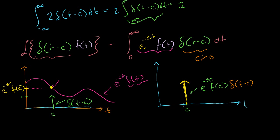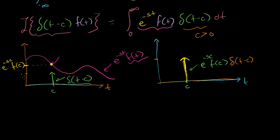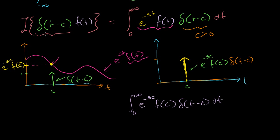So what's the integral of this thing? Taking the integral from 0 to infinity — since this thing equals that thing — it should be the same as taking the integral of e to the minus sc times f of c times the delta function of t minus c, dt. I'm claiming these are equivalent because everywhere else the delta function zeroes out this function, so we only care about e to the minus st times f of t when t is equal to c. And that's why we were able to turn it into a constant.